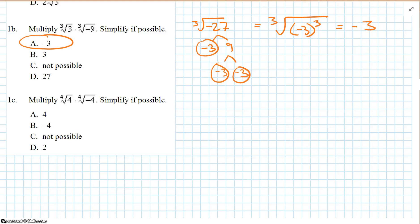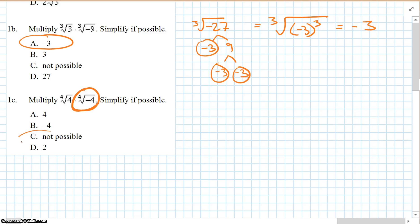The fourth root of 4 times the fourth root of negative 4 — we don't even have to do any work. That's an even index number and that's a negative number. Remember, we can't have an even root of a negative number, so that is not possible.